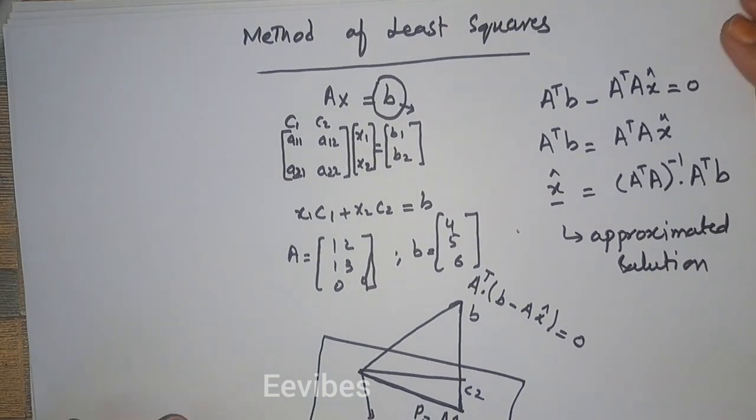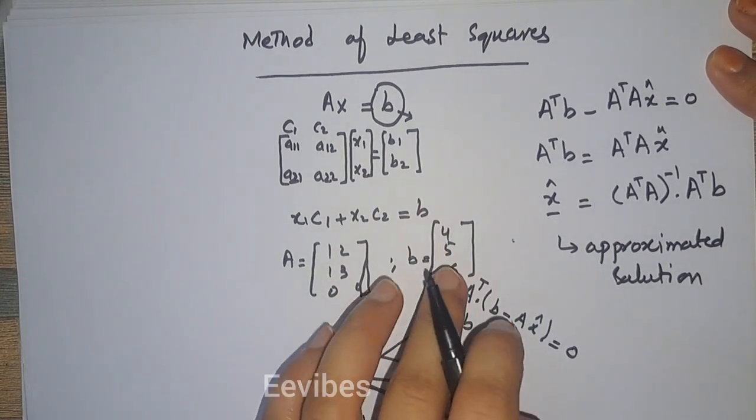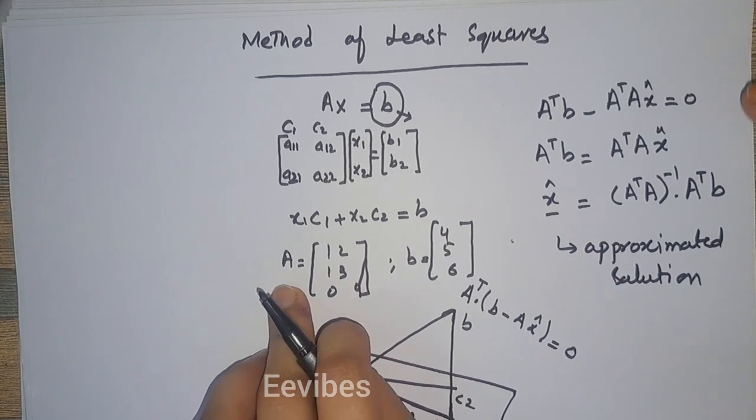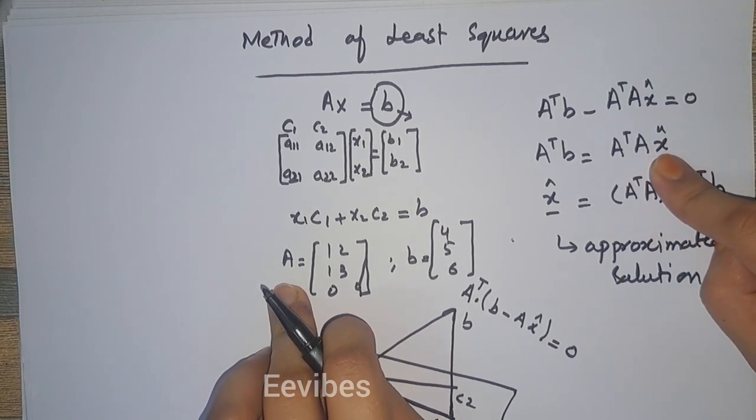So let's just apply the method of least squares for finding the solution of this system. Now, first of all, what you have to do? You have to evaluate A^T into A.